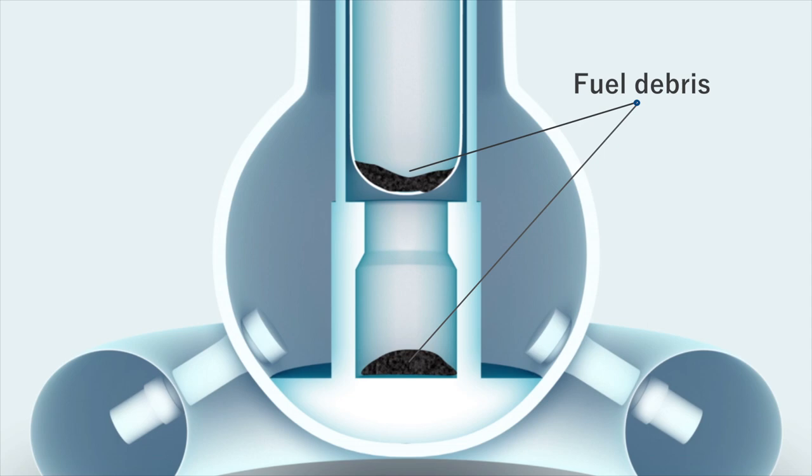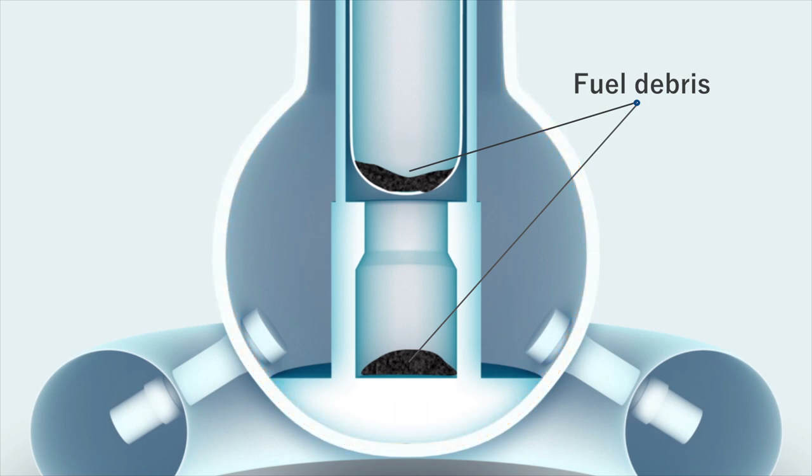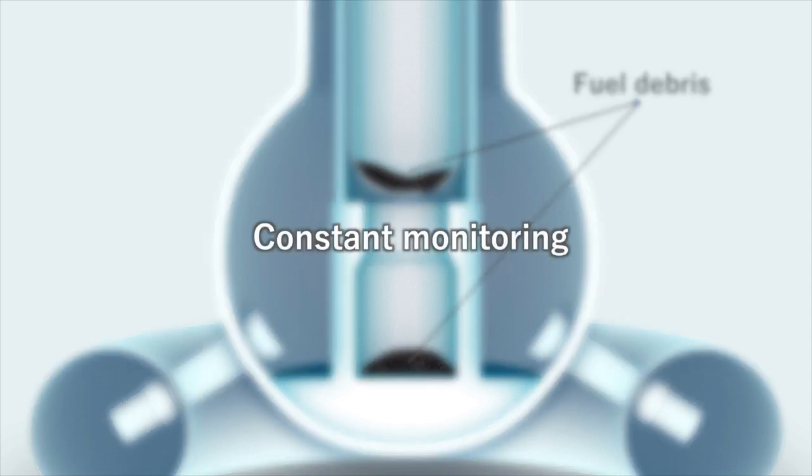It is highly possible that the fuel debris has reached not only the reactor pressure vessels, or RPVs, but also the bottom of the primary containment vessels, or PCVs. The stability of the temperatures inside the RPVs and PCVs has been constantly monitored to ensure that the remaining heat from the fuel debris continues to be cooled.